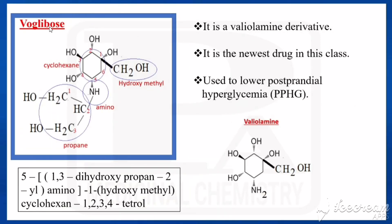The next drug is voglibose. Its structure has a cyclohexene nucleus with four hydroxy groups at positions one, two, three, and four, and also has a hydroxymethyl group at the first position. The fifth position has an amino group connected with a dihydroxypropane chain (three carbons with two hydroxy groups).